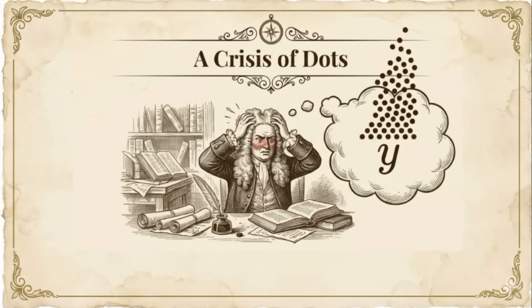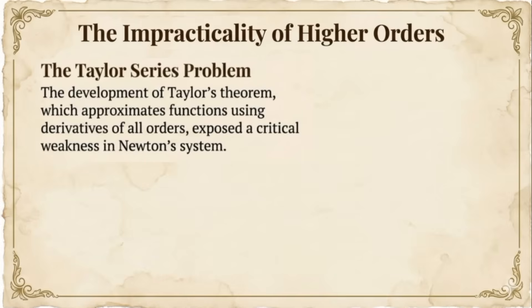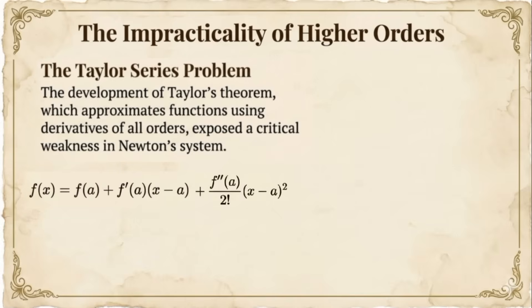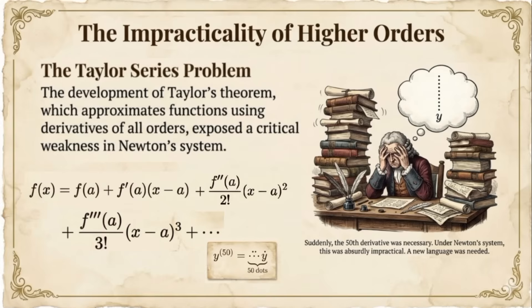Then came Taylor's theorem, named after mathematician Brooke Taylor. The Taylor series allows us to approximate any continuous function using derivatives of all orders. The Taylor series looks like this: f(x) equals f(a), plus f'(a) times (x minus a), plus f''(a) times (x minus a)² divided by 2 factorial, plus f'''(a) times (x minus a)³ divided by 3 factorial, and so on. Suddenly, calculating the 50th derivative wasn't just theoretical — it was necessary. Under Newton's system, the 50th derivative would require 50 dots stacked above the y. Absolutely impractical.